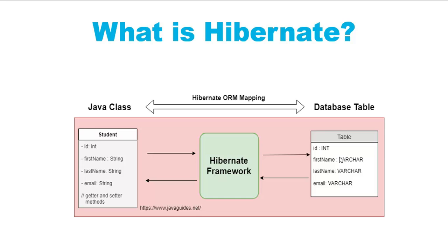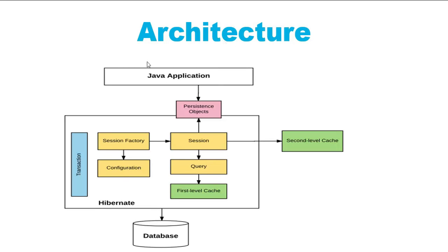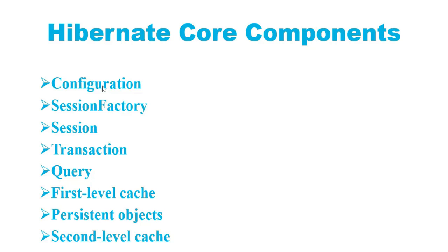Now let's look at the Hibernate architecture. Hibernate sits between the Java application and the database. The Java application uses Hibernate APIs to perform database operations. The core components of Hibernate include: Configuration — we generally write configuration in hibernate.properties or hibernate.cfg.xml file, or for Java-based configuration a class annotated with @Configuration. Configuration is used by SessionFactory to work with the application and database.